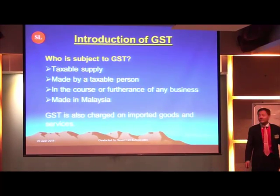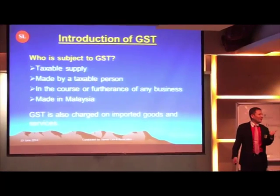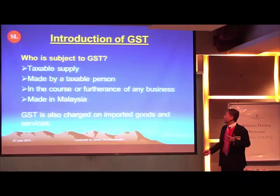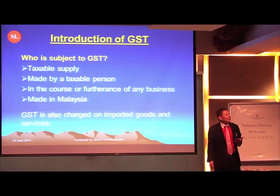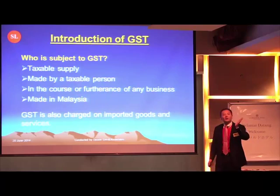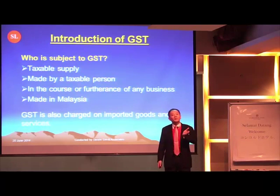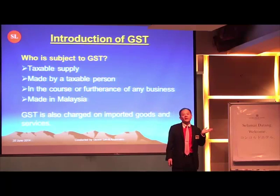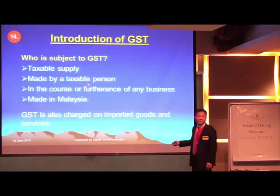What are the four questions? Number one, it must be a taxable supply. Number two, it must be made by a taxable person. A taxable person is one having a turnover of 500,000 and above a year. So you must be doing 500,000 and above turnover a year to be considered a taxable person.